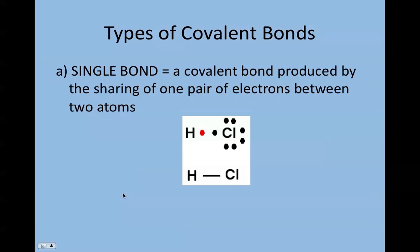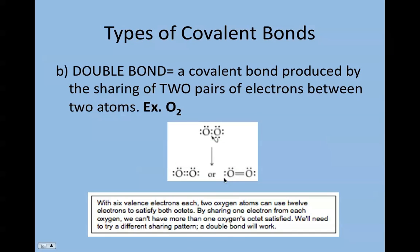A single bond is represented by either two dots between the two elements or a single line. A double bond, for example O2—O2 only has access to enough electrons that would put eight electrons around one oxygen and six around the other. To accomplish complete octets for both, we have to move one additional pair to be shared between the oxygens.